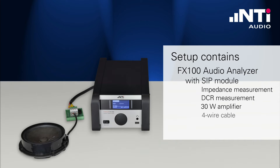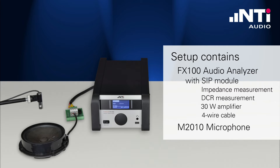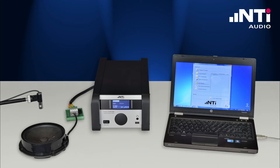It is directly connected via a 4-wire cable to the FX-SIP module in the FX100. This guarantees that the cable impedances do not affect the results. To measure the acoustic parameters of the loudspeaker, we use a M2010 measurement microphone, which is also directly connected to the FX100. Last but not least, we need a PC or notebook to control the FX100, connected via USB.